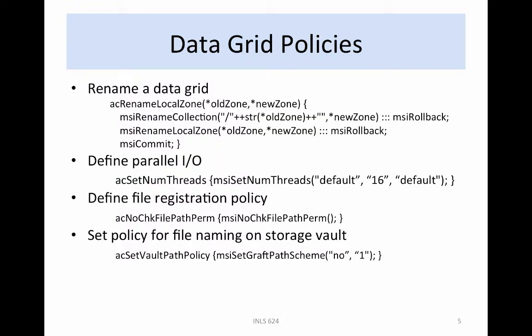A policy is needed to manage the renaming of a data grid, shown here. This is an involved process since the data grid name is embedded in the path information for every file. The policy has two steps: first changing the path names and then changing the data grid zone name. Recovery mechanisms are used to roll back changes to the database if either step fails. If the second step fails, the changes from both the second and first step are rolled back.